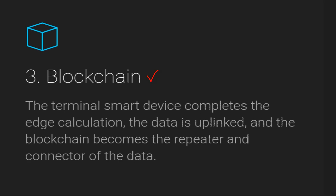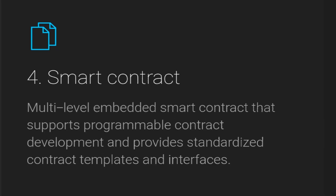Hawk Network also offers blockchain services, whereby the terminal smart device completes the edge calculation. The data which is uploaded to the blockchain becomes the repeater and connector of the data. Hawk Network is built on the Kakao platform, which is the Claything blockchain, and it also offers smart contract services.